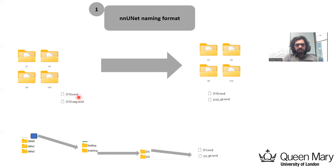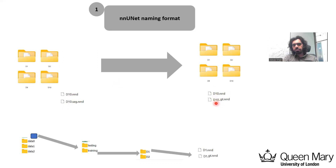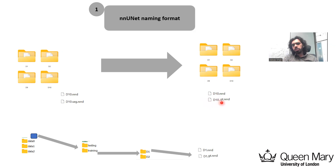NNUnit expects the data in a specific naming format. It expects: the image name plus file extension, and the ground truth name should be the same as the image name but with the suffix underscore_gt. So we need to convert the dataset to this naming format, where each subject folder has a unique name, and inside each folder the image and ground truth share the same subject name — with the ground truth having the suffix underscore_gt. This way NNUnit will understand which is the image and which is the ground truth.